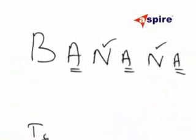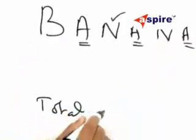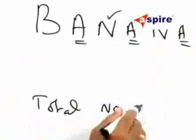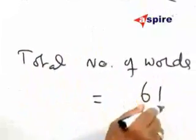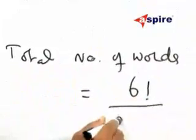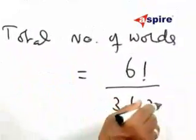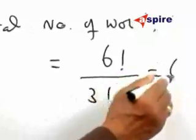Therefore the total number of words, the arrangement, will be factorial 6 by factorial 3 and factorial 2. This is equal to 60.